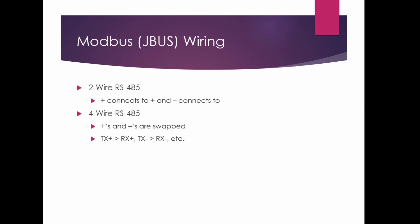For your Modbus or JBUS wiring, on your two-wire make sure your polarity is correct, and same with your four-wire. I've seen where the polarity gets backwards — it generally happens at the gateway end, but it pays to make sure and check it all the way through.